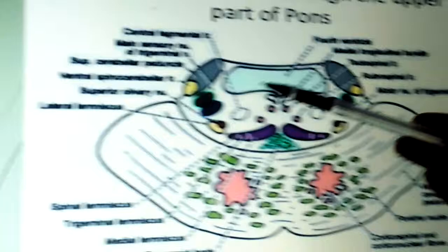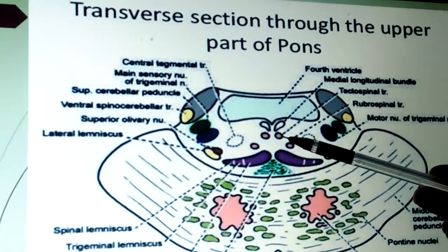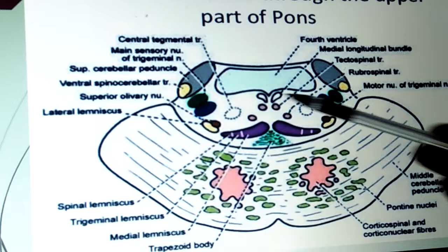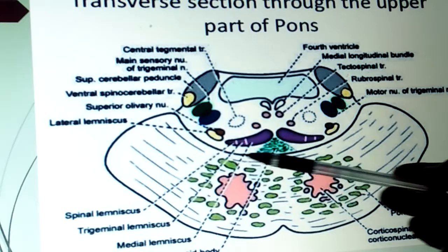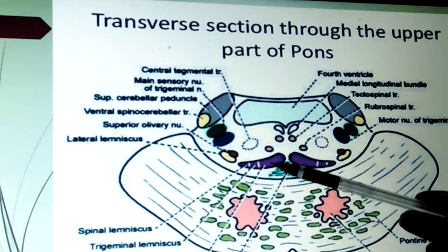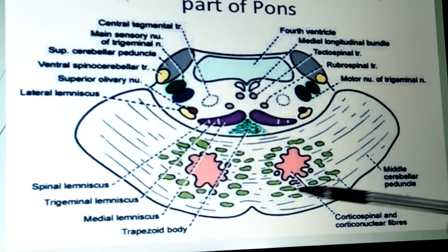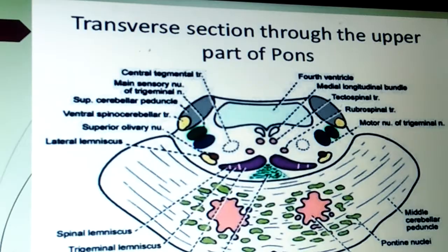Transverse section through the upper part of the pons shows: central tegmental tract, fourth ventricle, medial longitudinal bundle, tectospinal tract, main sensory nucleus of the trigeminal nerve, lateral lemniscus, spinal lemniscus, trigeminal lemniscus, medial lemniscus, trapezoid body, corticospinal and corticonuclear fibers, pontine nucleus, and middle cerebellar peduncle.